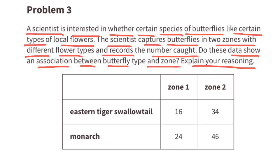Problem number 3. A scientist is interested in whether certain types of butterflies like certain types of local flowers. The scientist captures butterflies in two zones with different flower types and records the number caught. Do these data show an association between butterfly type and zone? When capturing Eastern Tiger Swallowtail butterflies, he found 16 in Zone 1 and 34 in Zone 2. For Monarch butterflies, he captured 24 in Zone 1 and 46 in Zone 2.